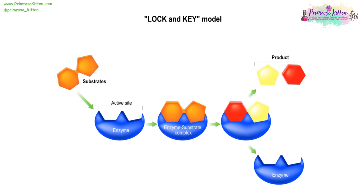We have our enzyme, which has a very specifically shaped active site, so only one substrate or a couple of substrates are going to fit in there - the ones that have the complementary sites. They're going to form an enzyme-substrate complex. And then the enzyme is either going to break apart things or join together things. It is then going to release the products, and the enzyme is unchanged and can be used again.